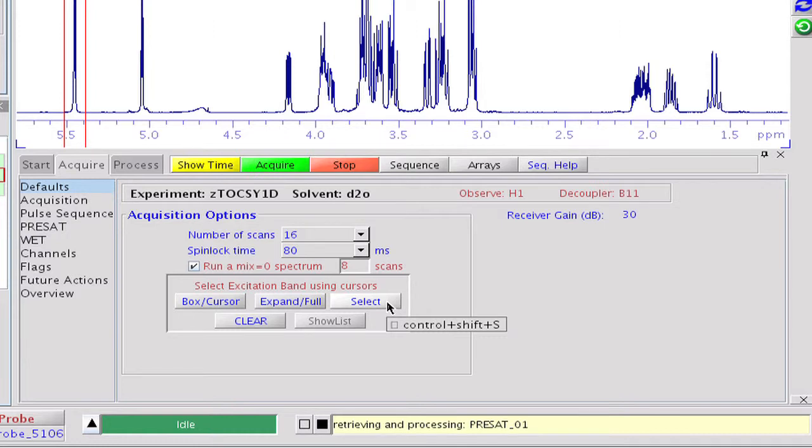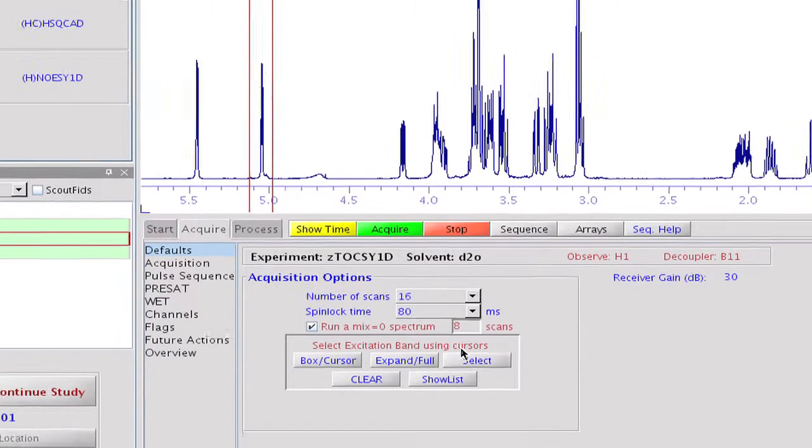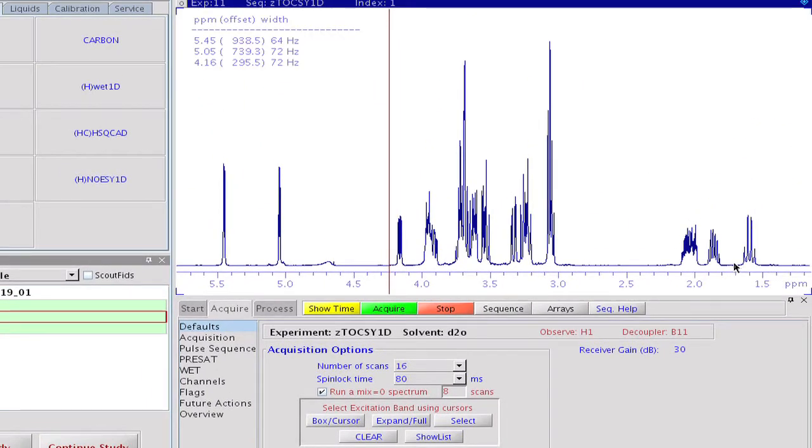We position the cursors and click on the select button. In the top left corner of the graphics canvas, we can monitor what has been selected so far. We may then select the other anomeric proton, then the multiplet at 4.2 ppm, and the last quartet signal at 1.6 ppm. If we had more targets we could continue until all requested signals are selected.